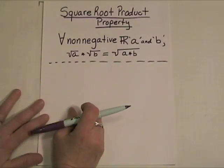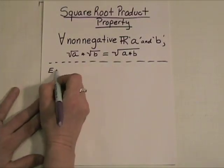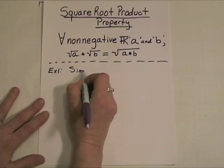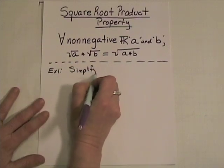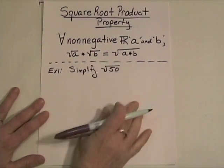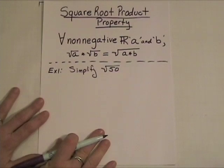Now, let's just take a look at a couple of examples. Here's the first one. Example one. Simplify the radical, the square root of 50. Now, we want to see if there are any perfect square factors of 50.